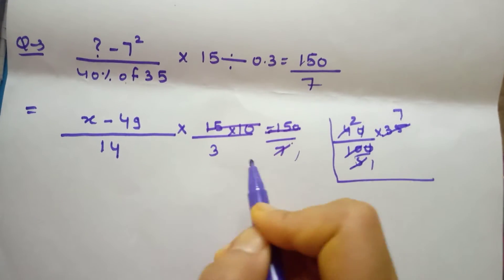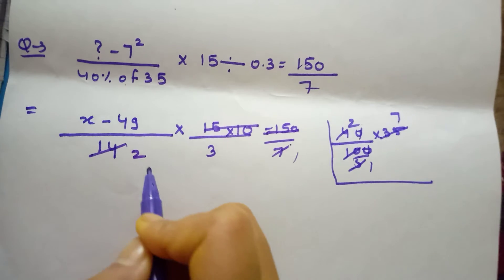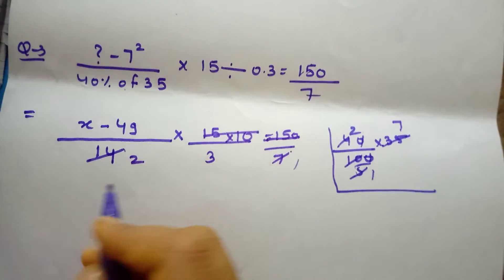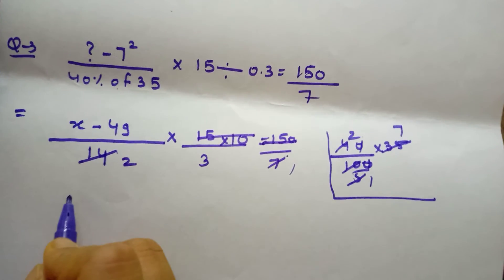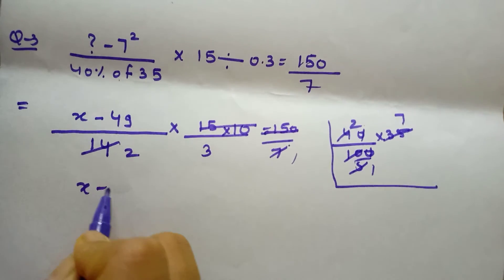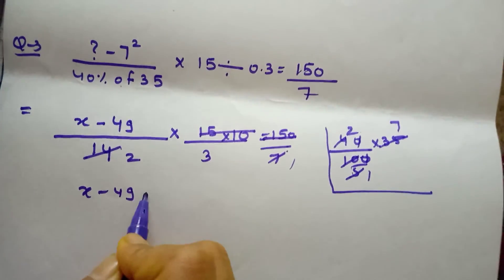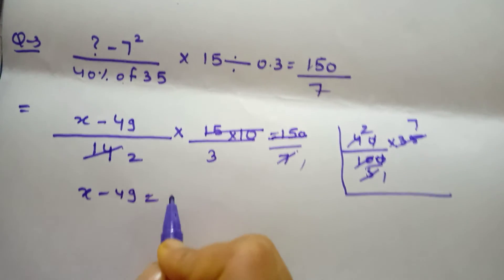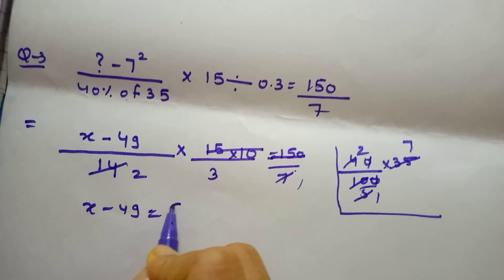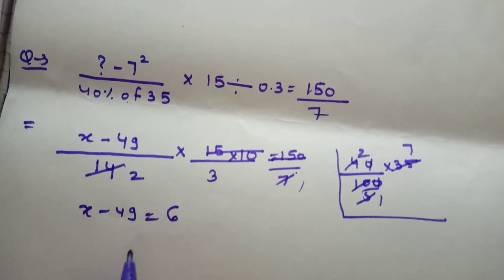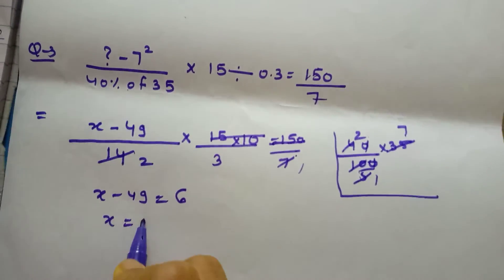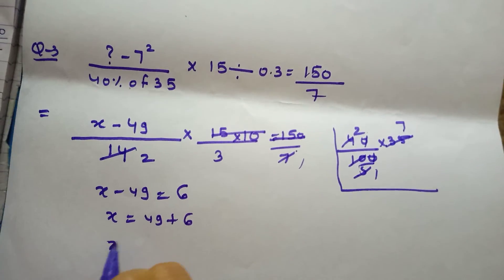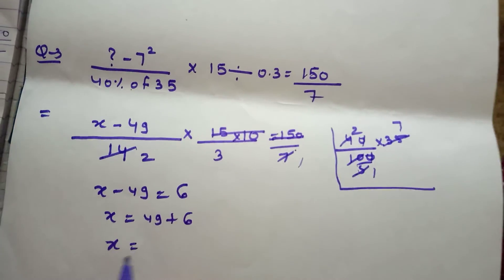7 to the 7, 7 to the 14. The answer: x minus 49 is equal to 36. So x is equal to 49 plus 6.